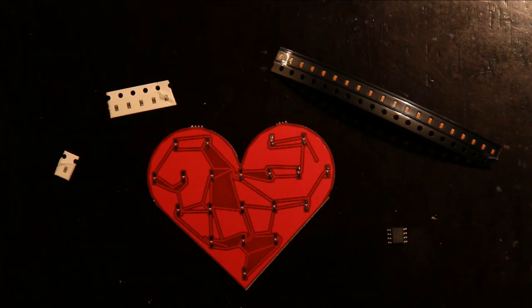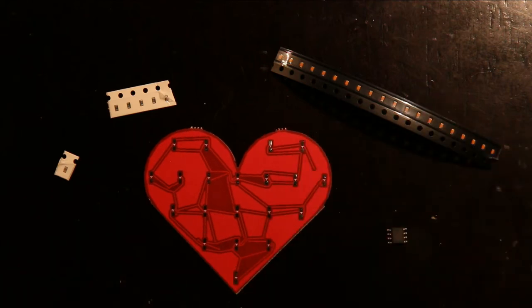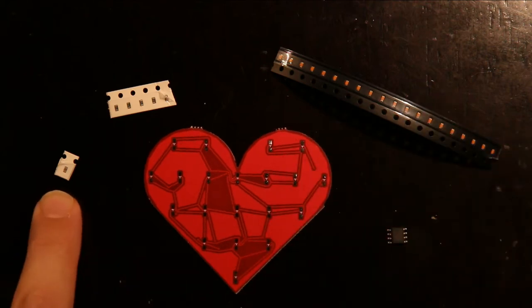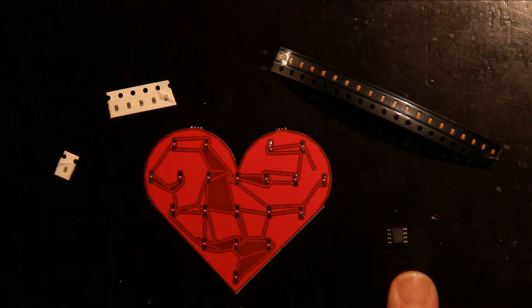In this video I'm going to solder together the tiny heart PCB, and to do that I need the PCB, a capacitor, five resistors, 20 LEDs, and an ATtiny 13A.